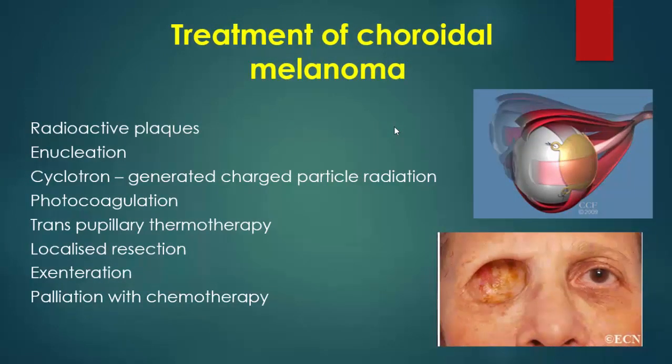Treatment of choroidal melanoma includes radioactive plaque — a metal plaque containing radioactive material sutured to the site of the tumor — enucleation, cyclotron-generated charged particle radiation, photocoagulation, transpupillary thermotherapy, localized resection of the tumor, exenteration of the globe and orbital tissue, and palliation with chemotherapy.